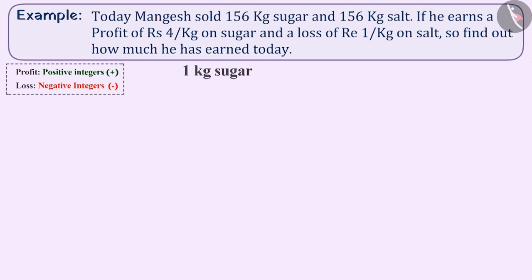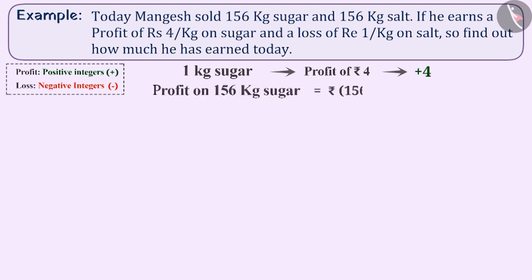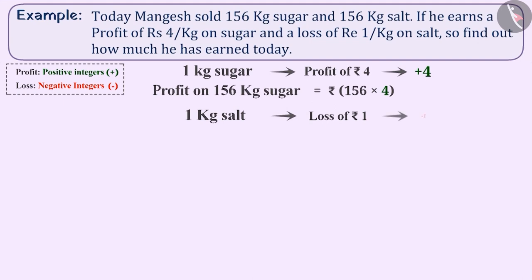Mangesh makes a profit of 4 rupees on 1 kg of sugar, shown as plus 4. On 156 kg of sugar, his profit will be 156 multiplied by 4. Similarly, the loss on selling 1 kg of salt is 1 rupee, shown as minus 1. So on 156 kg of salt, Mangesh's loss will be 156 multiplied by minus 1.